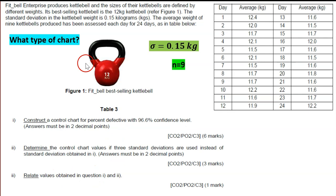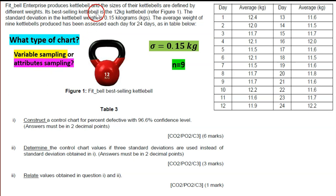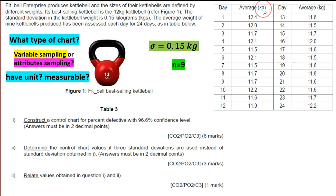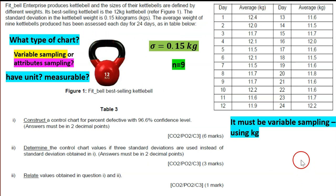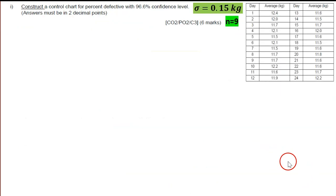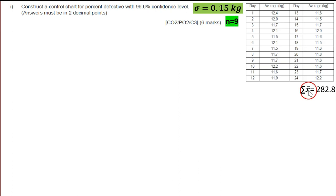First step: what type of chart? Is it variable or attribute sampling? Check if it has a unit — yes, kg. Is it measurable? Yes, by weight. So it's going to be the X-bar chart. For the X-bar chart, the formula uses X-bar-bar. First we need to find the sum of X-bar.